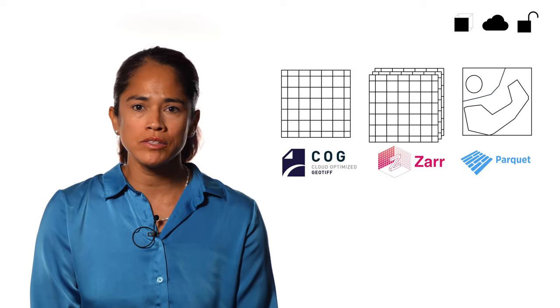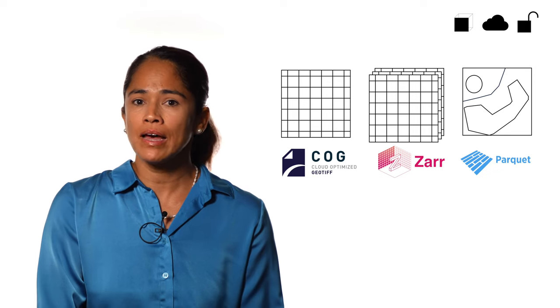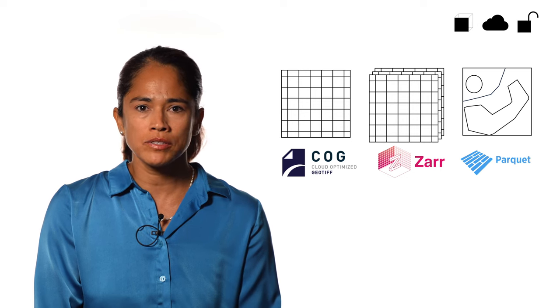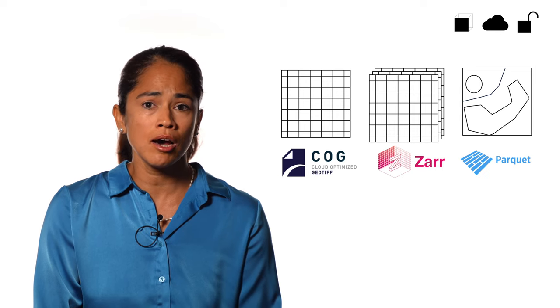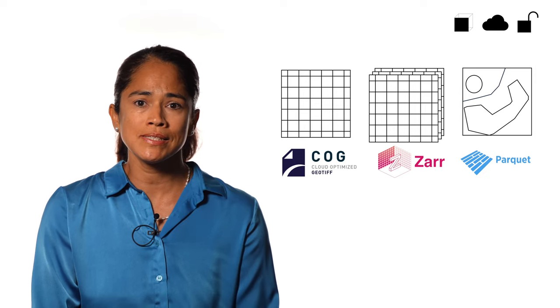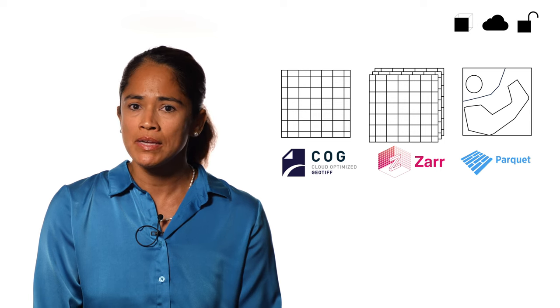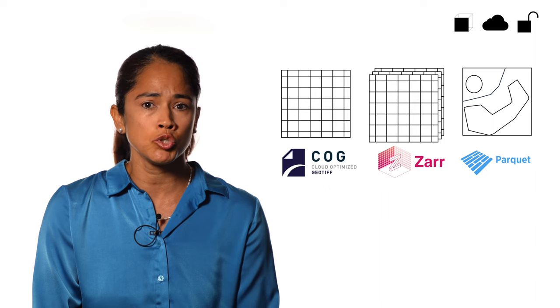Since EO data comes in various formats, there is no one-size-fits-all cloud-native format. Different cloud-native counterparts exist for standard raster, vector, multidimensional rasters, and point clouds. Common formats for raster data include COGs, which adhere to OGC standards and capture gridded data at a specific point in time, such as digital elevation models or single bands of Sentinel-2 products.